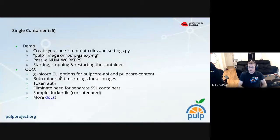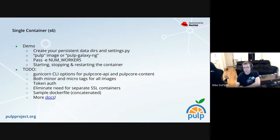Some things on the to-do list for the single container: we want to specify gunicorn CLI options — most settings for Pulp are in settings.py, like object storage, but there are gunicorn options users should be able to specify, like scaling the number of worker sub-processes. We also want to support both minor and micro version tags on container images. Token auth is not implemented yet.